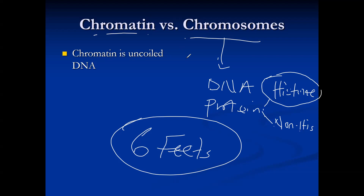Chromatin is uncoiled DNA, and it is further divided into two types: heterochromatin and euchromatin. We will look at those as we continue with the lecture.